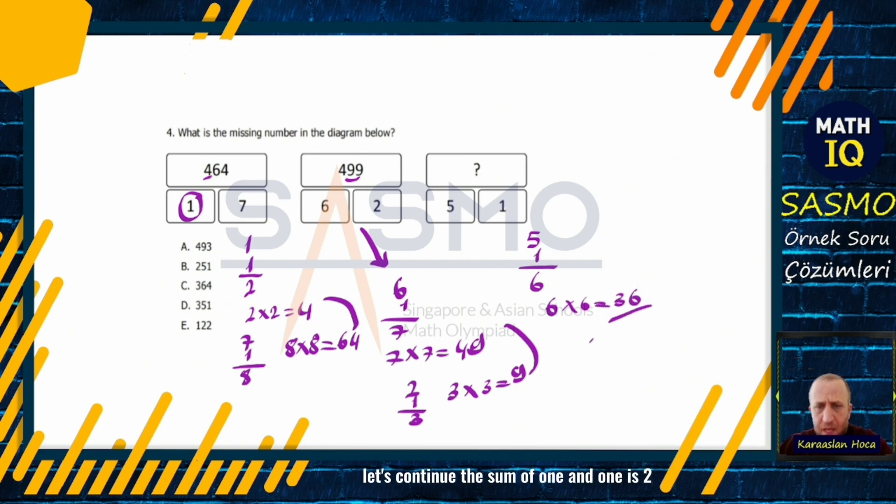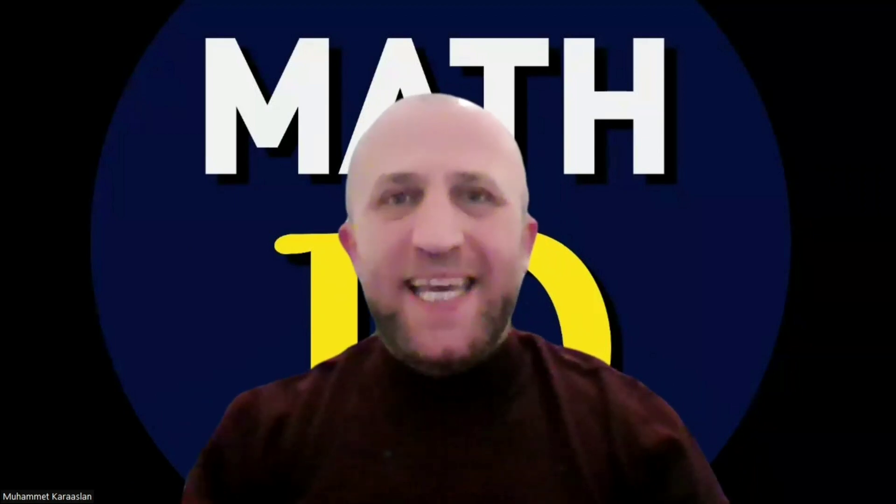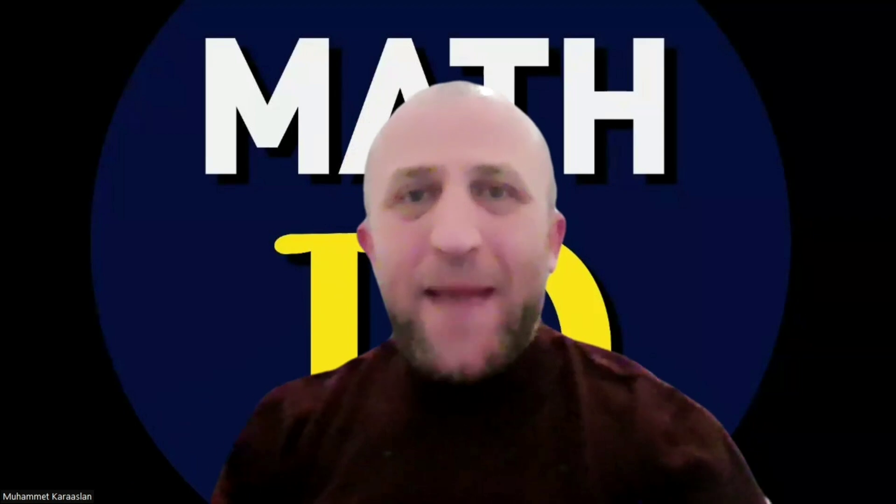Let's continue, the sum of 1 and 1 is 2. 2 times 2 times 2 is 4. The number we are looking for should be 364. That's OK. Don't forget to subscribe to MathIQ channel. We hope you like and share our videos. Always stay true like math. See you.